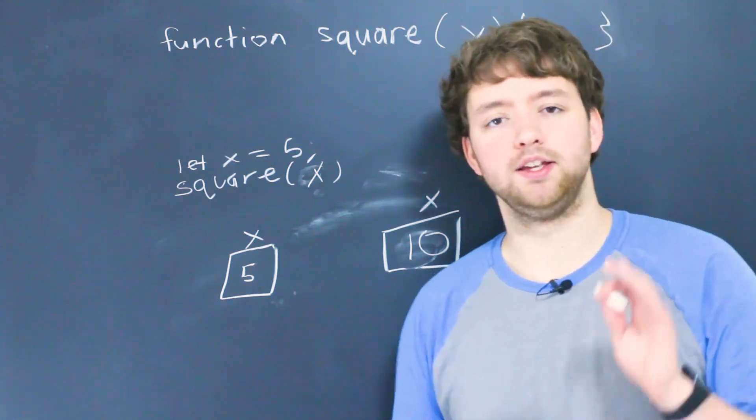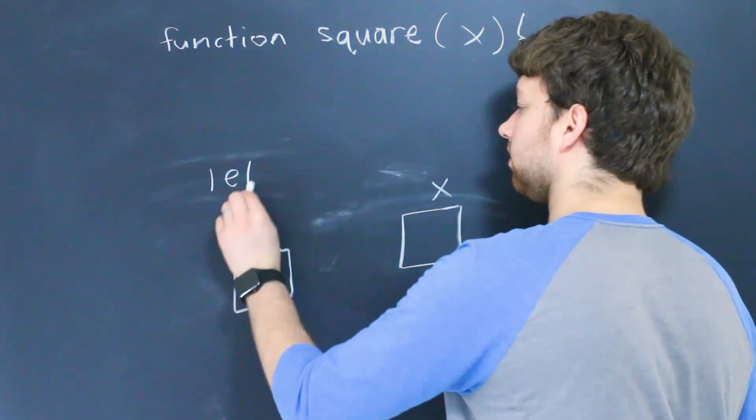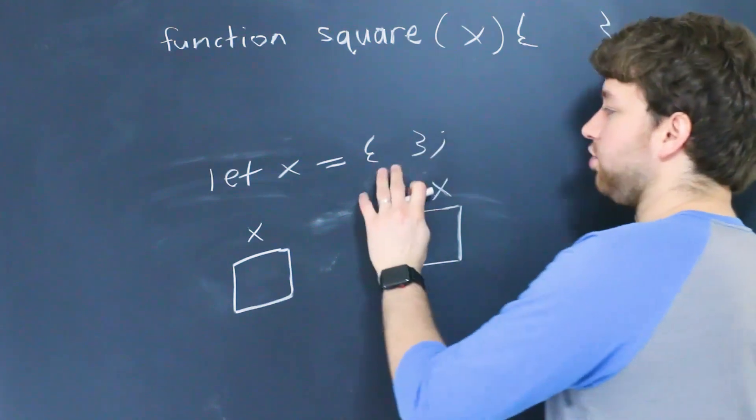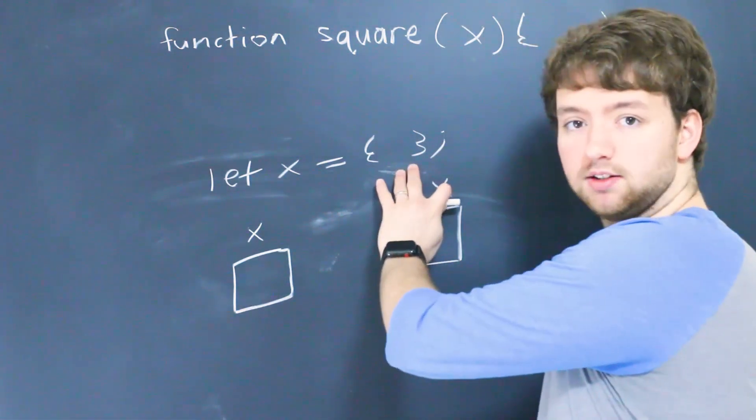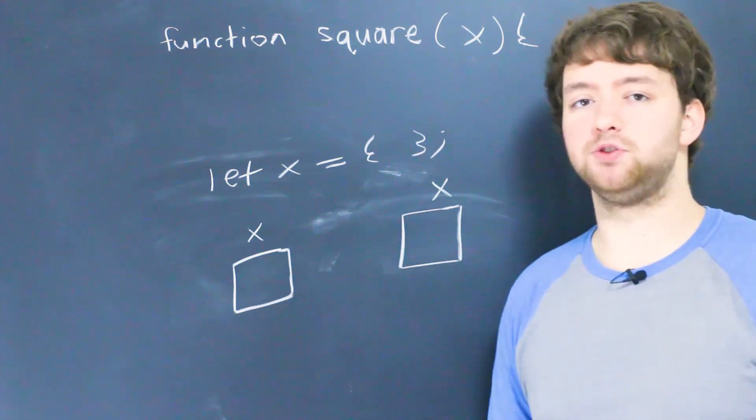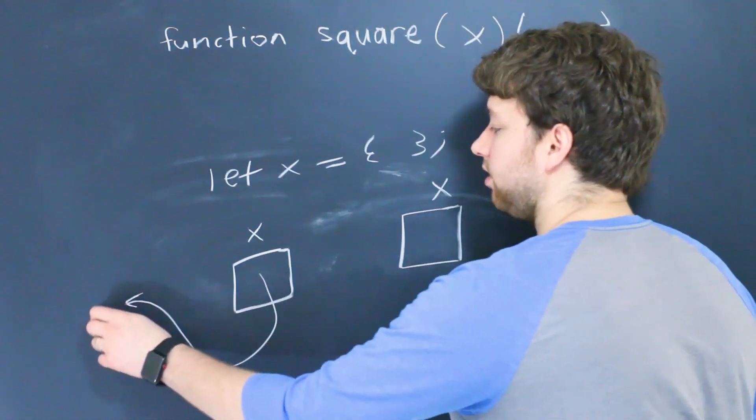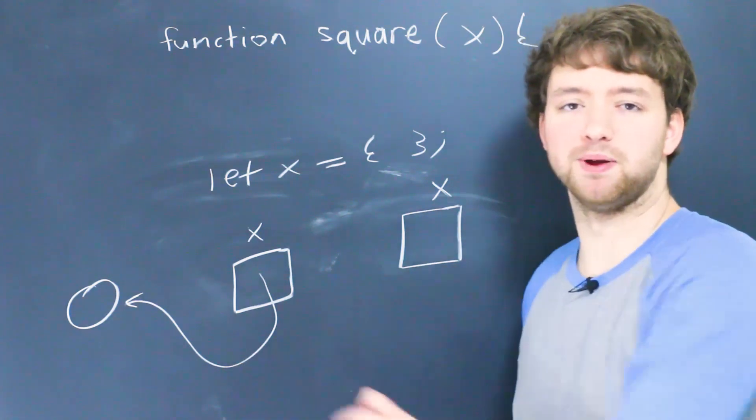And the reason why is because of this. Let's say we create a variable X but this time we assign it an object. And here is just an empty object but you could put stuff in this object. Well what's actually going to be stored in this variable is a reference to where this object is in memory. So think of it as if it's pointing to some object in your computer's memory.